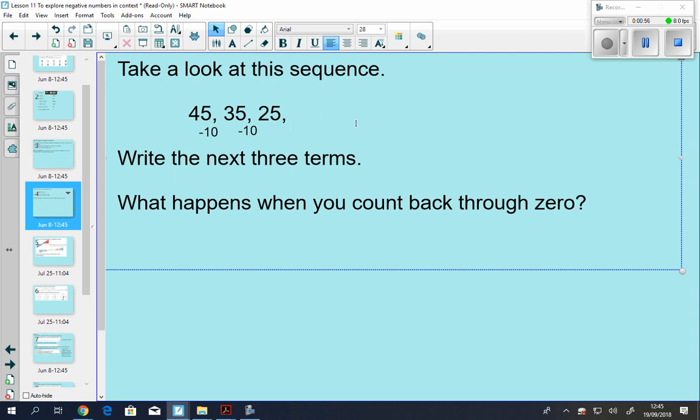The next three terms are 15, then 5, and when we subtract 10 from 5, we end up with negative 5.